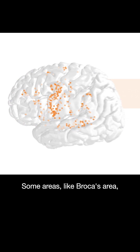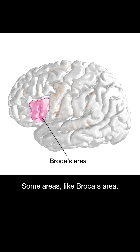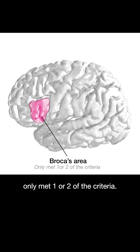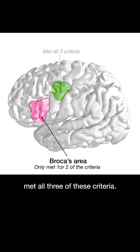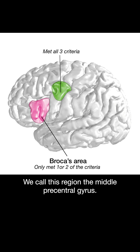Some areas, like Broca's area, only met one or two of the criteria. However, a region in the precentral gyrus met all three of these criteria. We call this region the middle precentral gyrus.